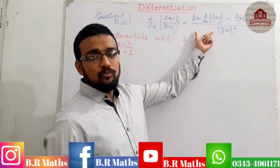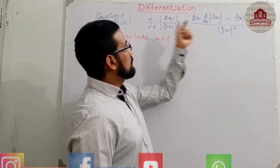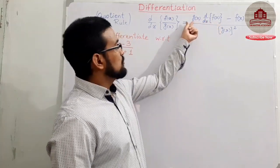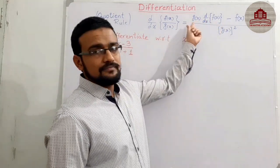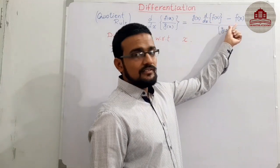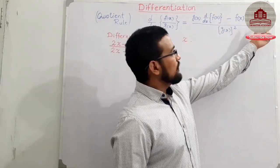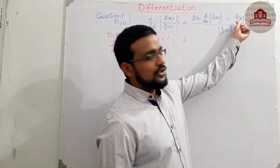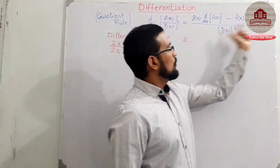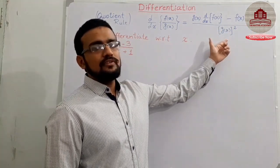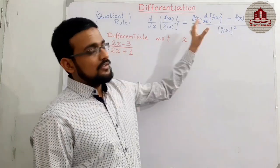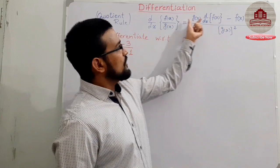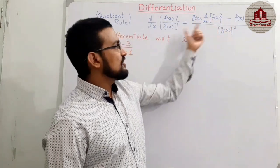To formalize this: first, the derivative of the numerator multiplied by the denominator, minus the derivative of the denominator multiplied by the simple numerator, and then the whole divided by the square of the denominator. In this formula, the arrangement of the derivative and simple function is important.